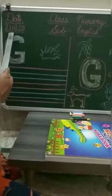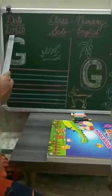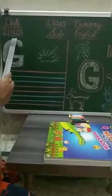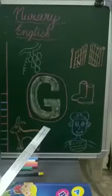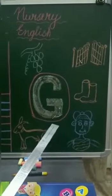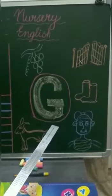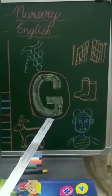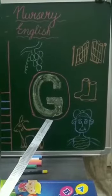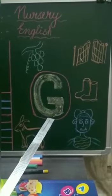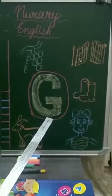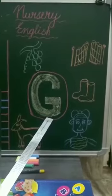So first of all, which date is today? Today is 2nd of November 2020. Now kids, look at here. These are the pictures related to letter G. Today we will revise its phonics and we will recognize its pictures too.